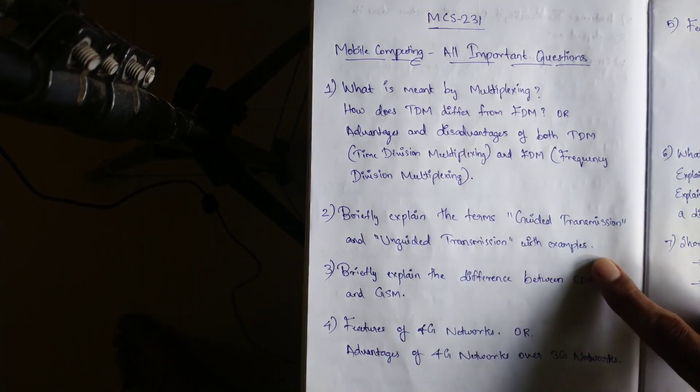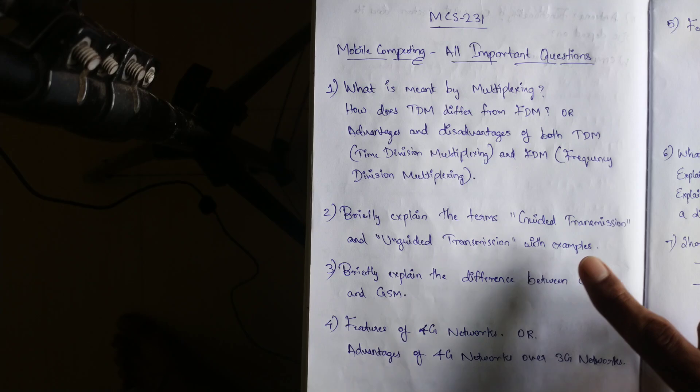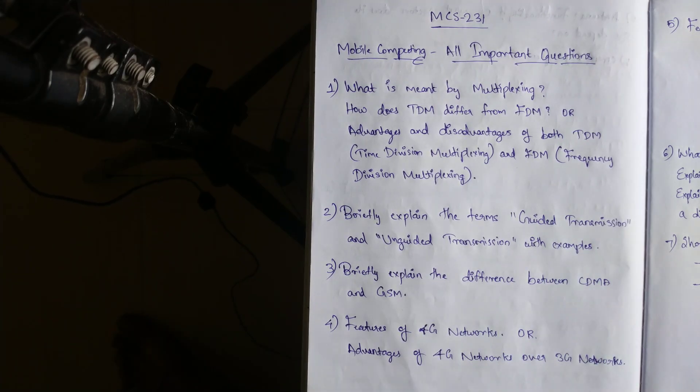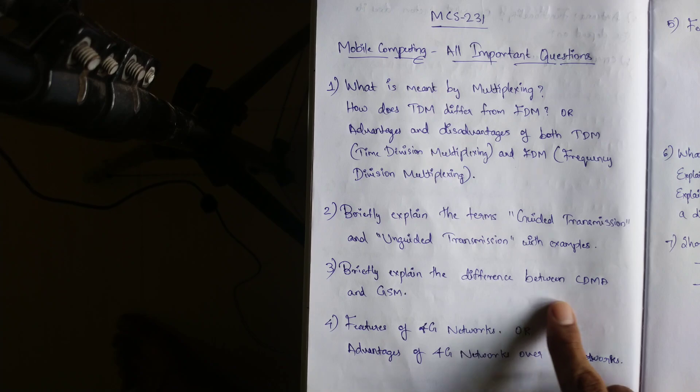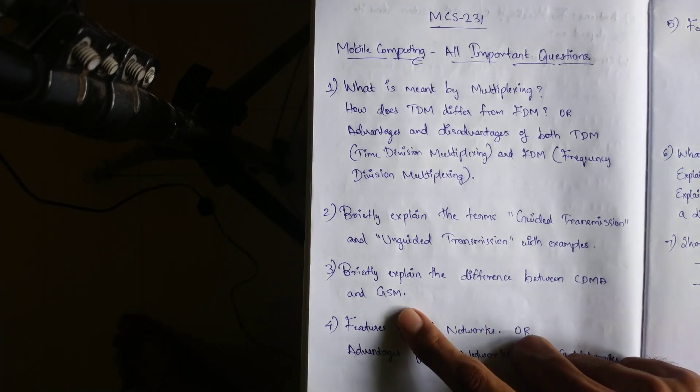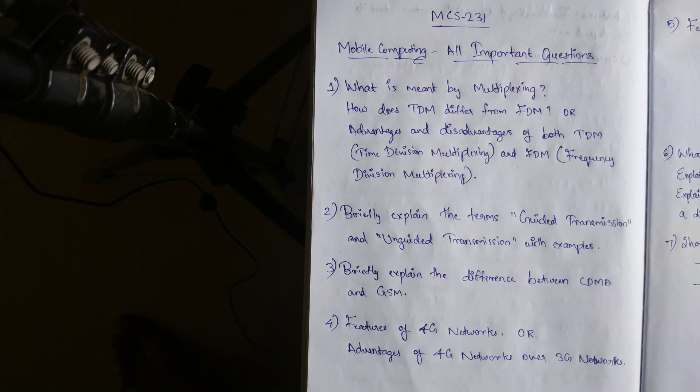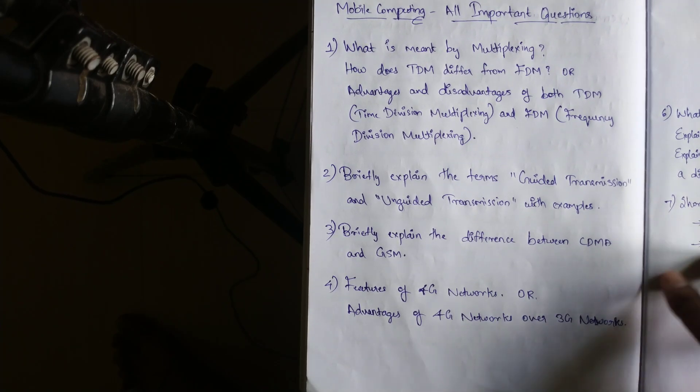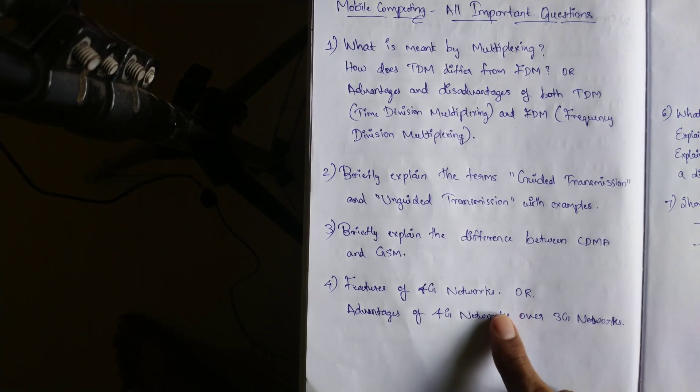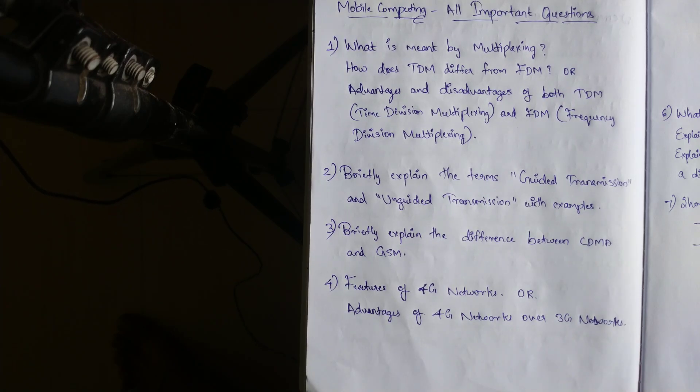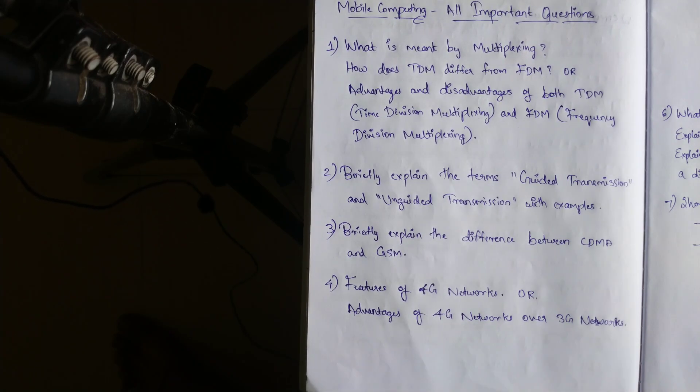The second one we are going to look at is the terms guided transmission and unguided transmission with examples. The third topic, the difference between CDMA and GSM. Sometimes GSM alone is asked in exam. And the fourth one is features of 4G networks or advantages of 4G networks over 3G networks. 4G networks is again a repeated question in the examination.